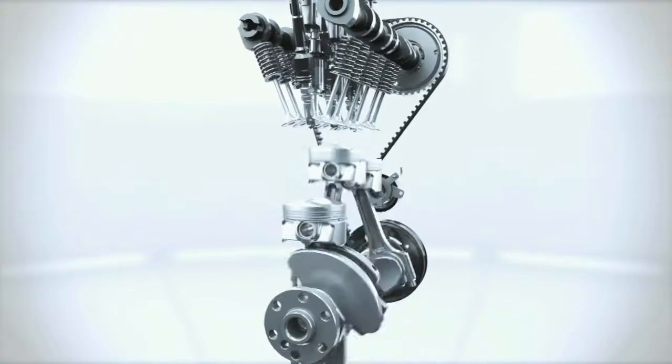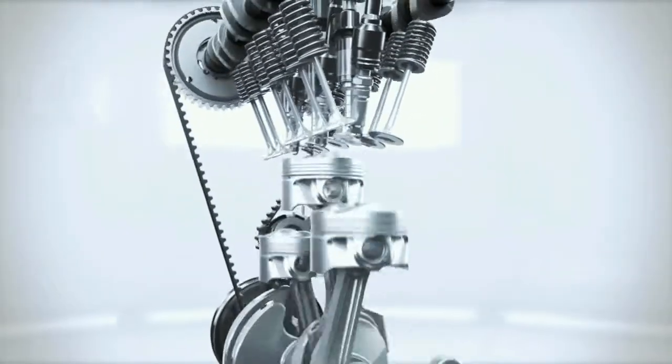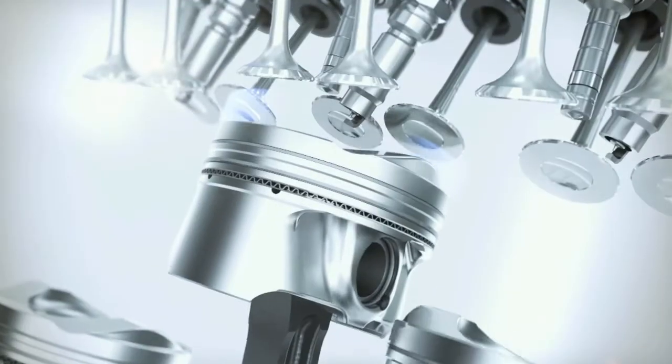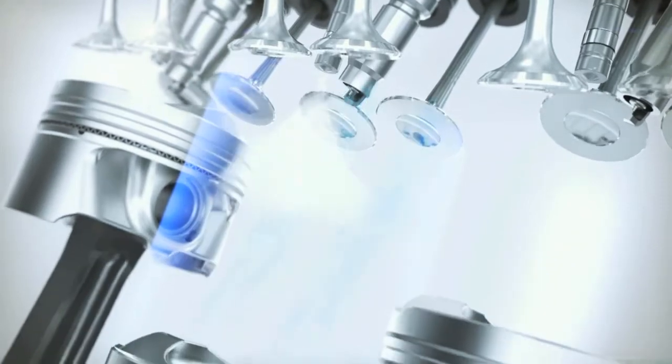The direct injectors of the second generation direct injection system are located centrally to provide a much cooler and denser fuel to air ratio, independent of the piston's geometry. This leads to more efficient combustion and reduces fuel consumption.